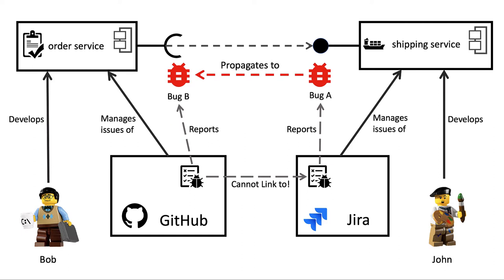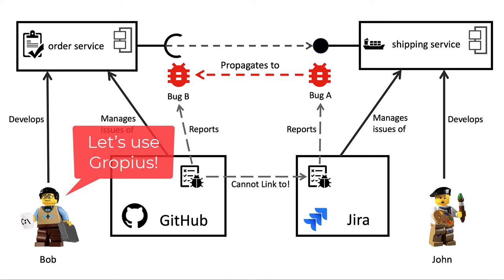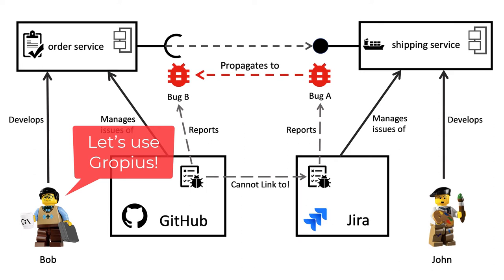However, since both services manage their issues independently in different systems, Bob cannot link his bug report semantically to the shipping service's bug report in the Jira project. Fortunately, there is Gropius, an integrated issue management system which can manage such cross-component issues and propagate changes to the underlying issue management systems of the services. Let us now take a look at a demo of Gropius and how Bob can use the tool to manage cross-component issues.